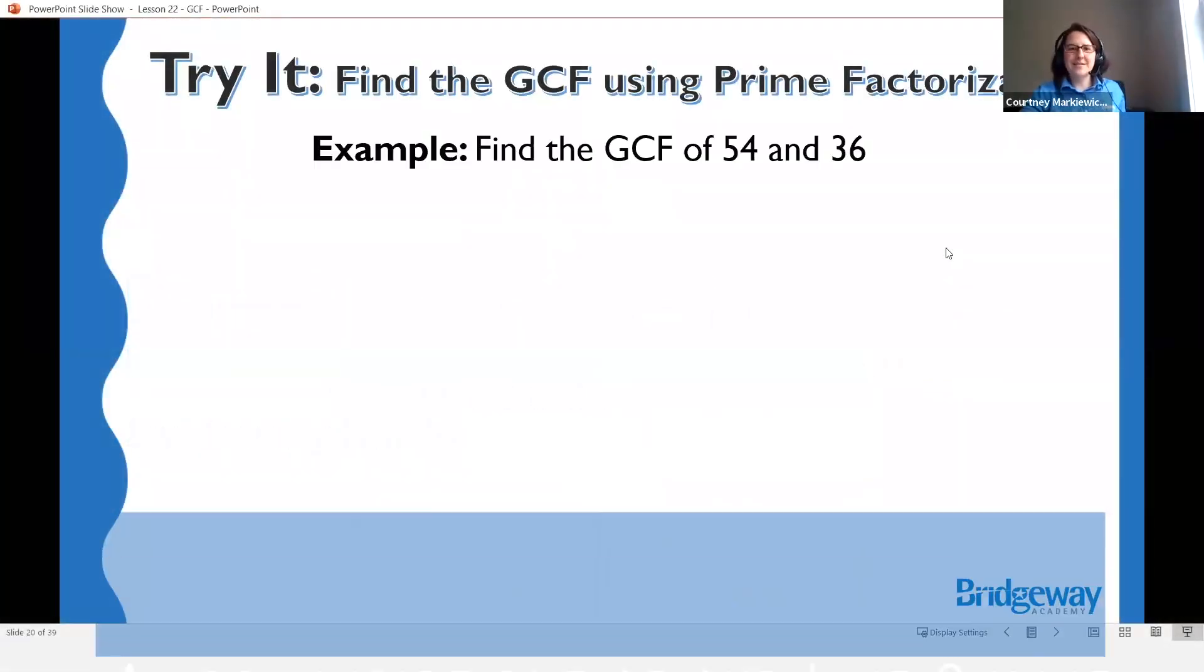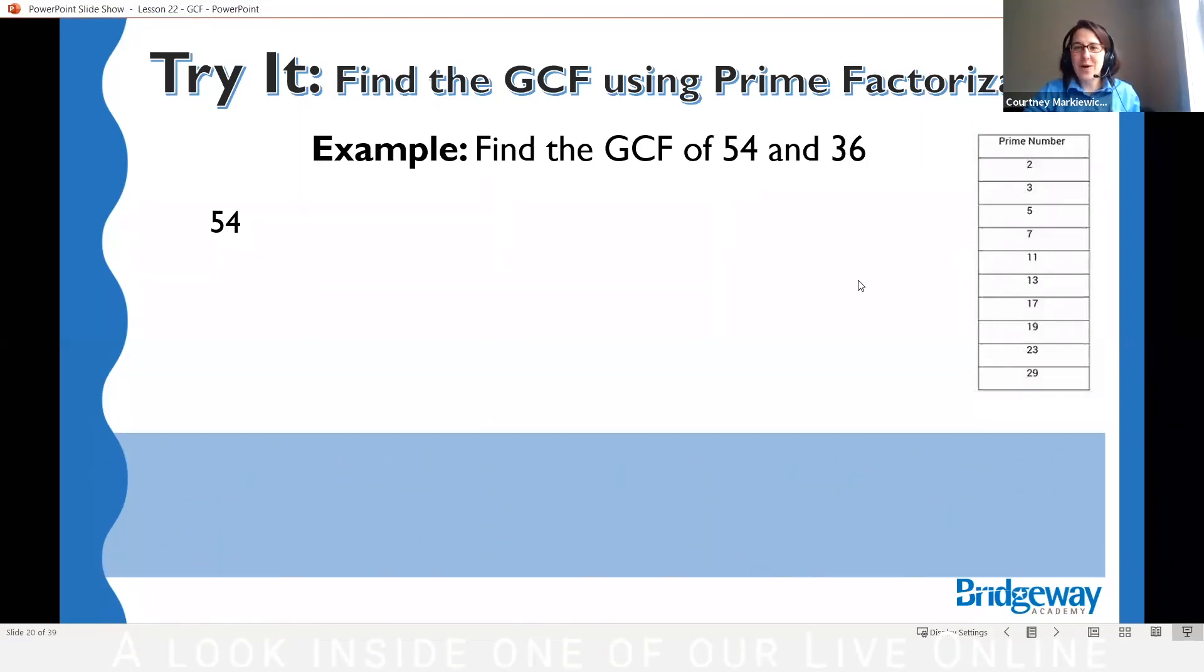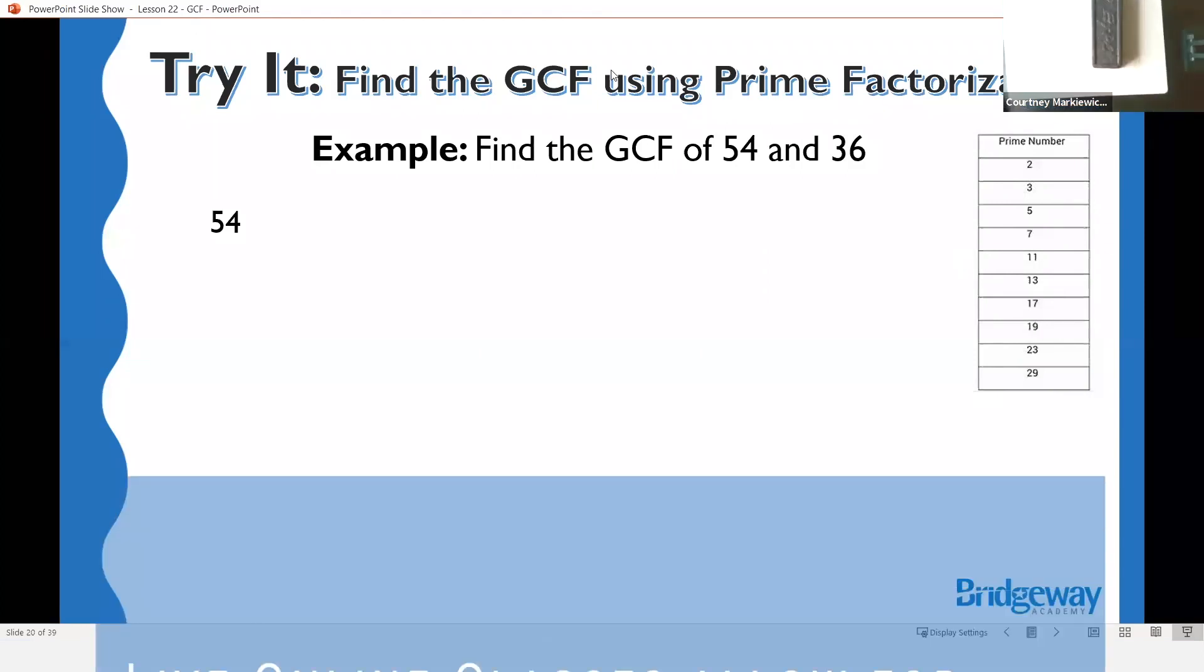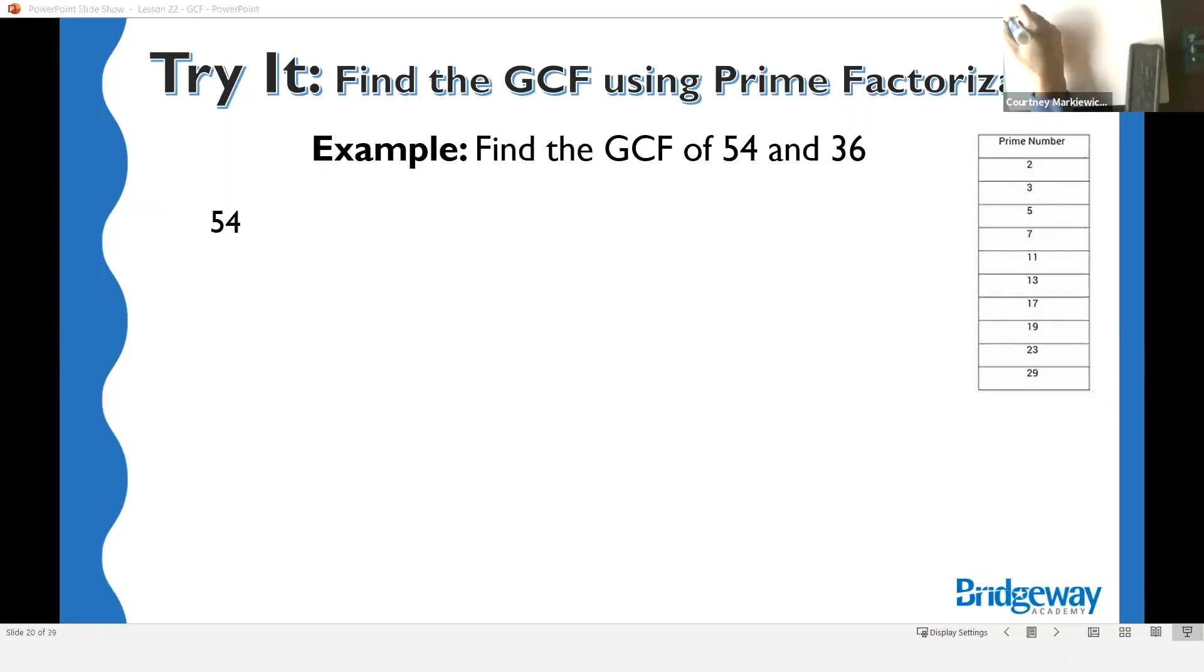Last example, then we're gonna practice. We're gonna make factor trees for 54 and 36, so I need a volunteer who can raise their hand and give me a factor pair for 54. What times what is 54? Two numbers that multiply to 54. Hi Daniel, go ahead. Yep, okay, how about nine and six?